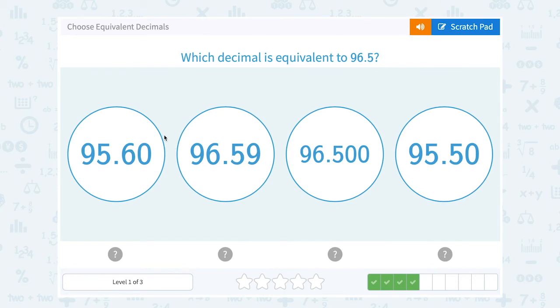Which decimal is equivalent to 96.5? Well, 95.6, no. 96.59, not quite. 96.500. Notice this is the same as 96.5 except it has two zeros on the end and putting zeros after your decimal does not change the value. So that would be equivalent.